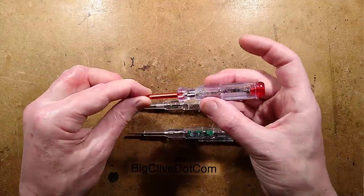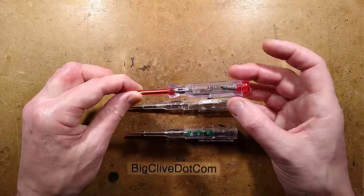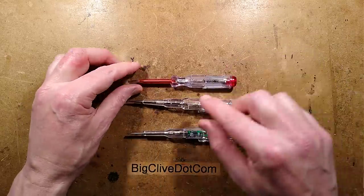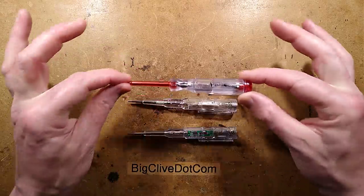So this thing is very simple. It contains a neon indicator and a 1M resistor and I'll show you the inside of this because this one is a British compliant one. It is designed to be safe.